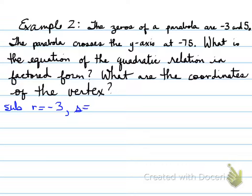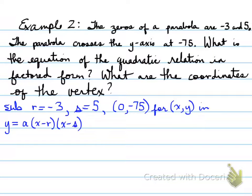So how do we do this? We sub r equals negative 3 and s equals 5. It says here that these are the zeros, they're the roots. We're going to now also sub the point, 0, negative 75. We're going to plug the point in for x and y into our factored form equation. Sometimes you have to decide which form you want to put it in based on the information given. We're plugging in a point other than the roots, and that's our y-intercept.